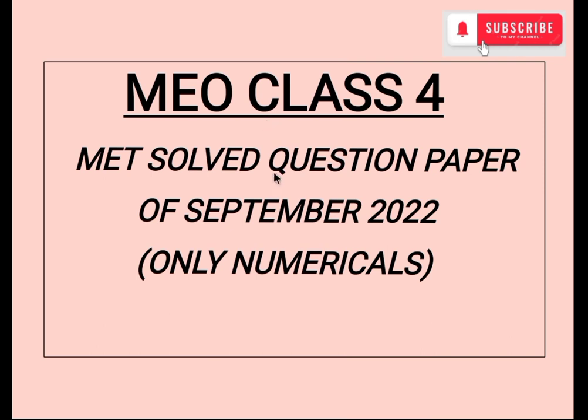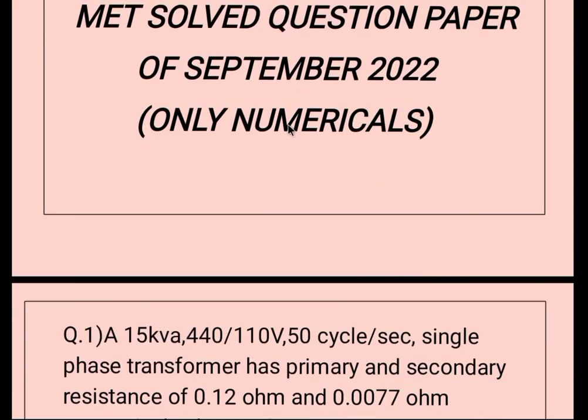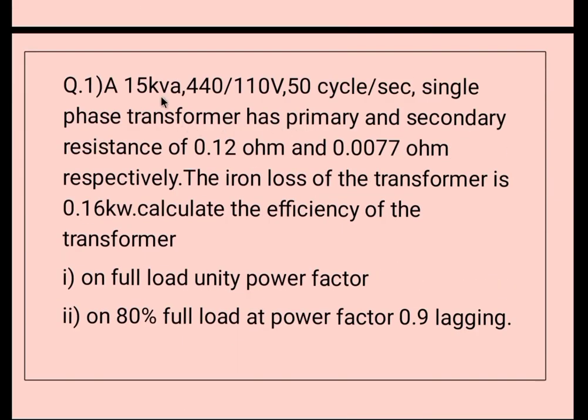First question of September 2022, question number one: A 15 kVA, 440/110 volt, 50 cycle per second single-phase transformer has primary and secondary resistance of 0.12 ohm and 0.0077 ohm respectively. The iron loss of the transformer is 0.16 kW.